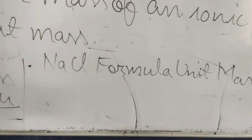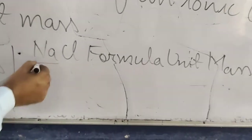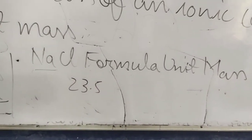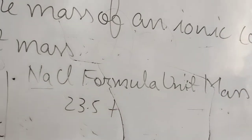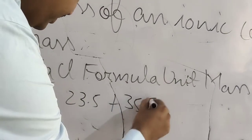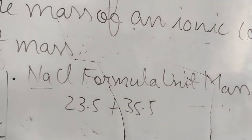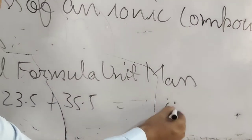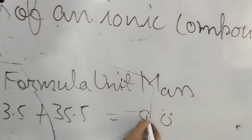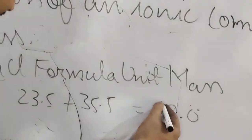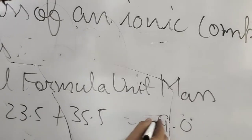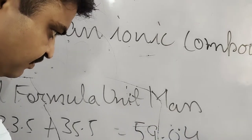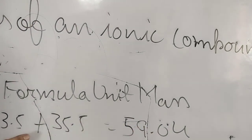For NaCl, sodium has an atomic mass of 23, and chlorine has an atomic mass of 35.5. When you add them, you get 58.5 U. So 58.5 U is the formula unit mass of sodium chloride.